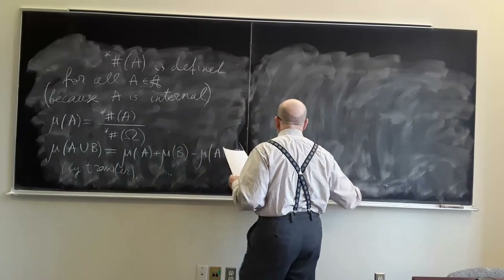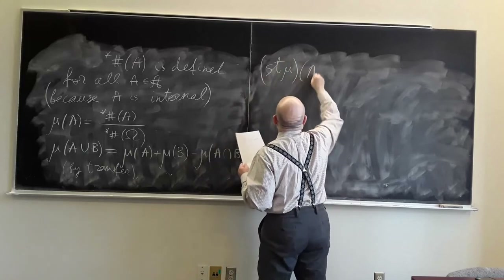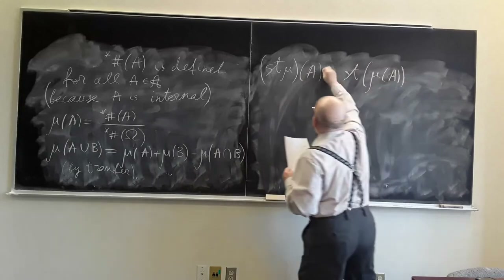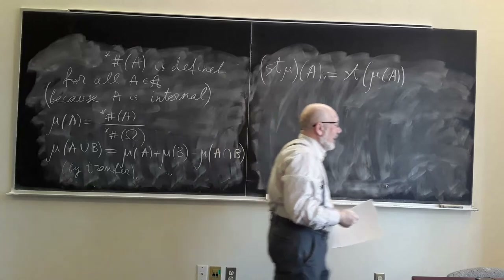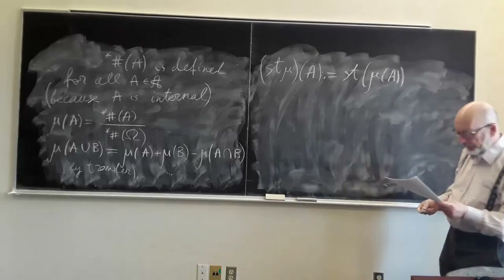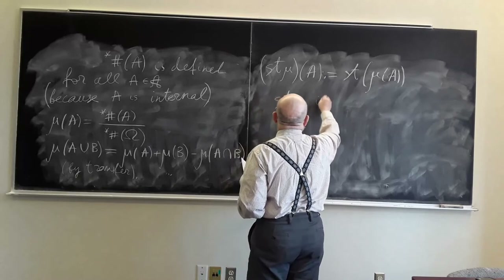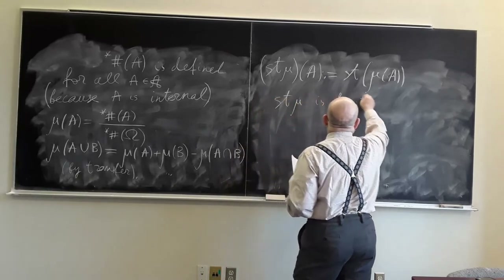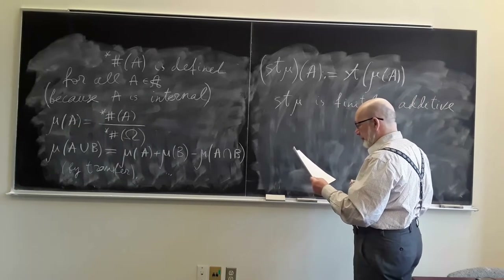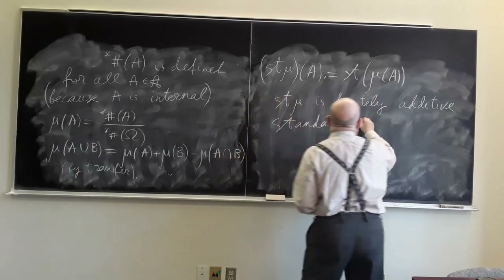So define the standard measure: standard-mu(A) = standard part of mu(A). This is already a standard measure and it is finitely additive. I regard this algebra A also as a standard algebra. As soon as I say it is standard, we erase all the complicated non-standard construction and just take it as a set of sets — but then its cardinality becomes quite large.